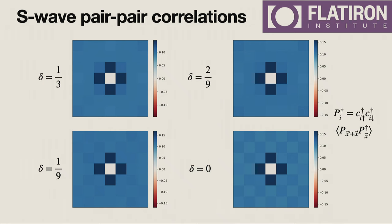Looking at the hole-doped Hubbard model plots, they're blue — meaning the superconducting order parameter is pretty large and persisting all the way across the cluster. The center is set to zero just so you can see the scale of the correlation functions. So we can see there's long-range S-wave superconducting order already stabilized on a 36-site cluster.